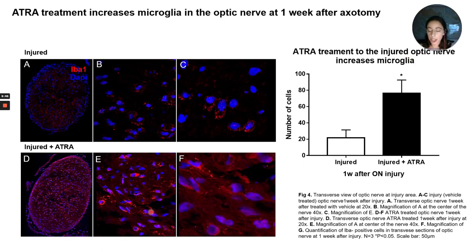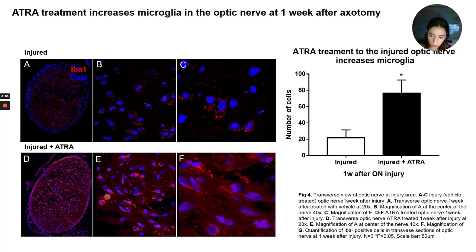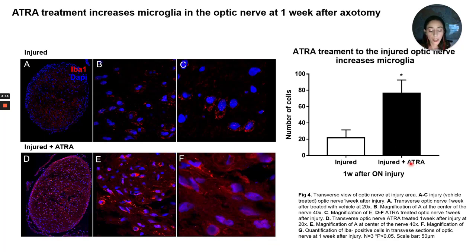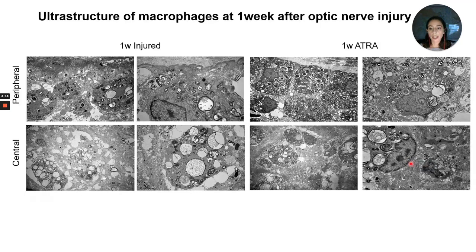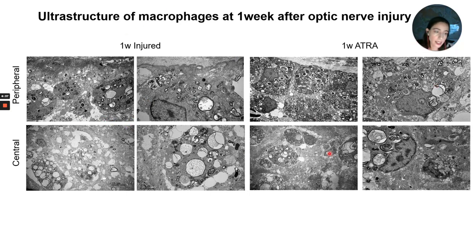Here are fluorescent images of the optic nerve in transverse view. The upper panel is the control with injury plus saline solution, and the lower panel is the injury with retinoic acid application. You can see the cells at low magnification and high magnification in the right panel, and the difference was statistically significant. When we further evaluated the ultrastructure of the cells, we found no differences between peripheral and central macrophages, but we saw lower density of macrophages in the saline or control group versus the retinoic acid application, and the cells appear fuller or more phagocytic.